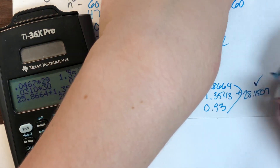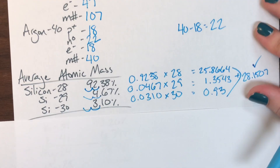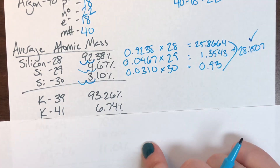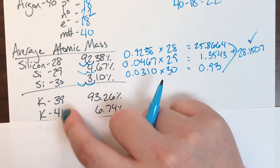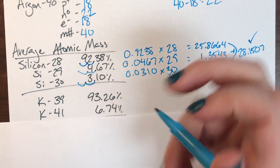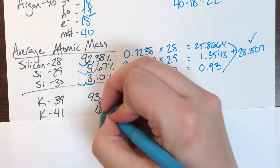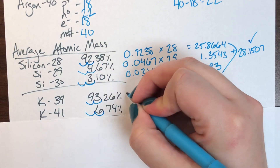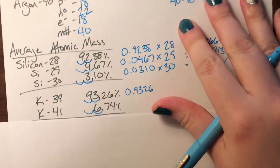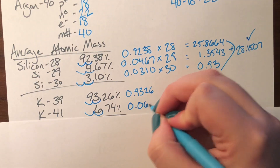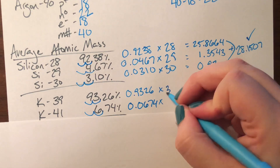Our next example is potassium. I have two isotopes: potassium-39 and potassium-41, with their respective percent abundances. I'll convert those percentages into decimals by moving the decimal two places: 93.26% becomes 0.9326 and 6.74% becomes 0.0674.